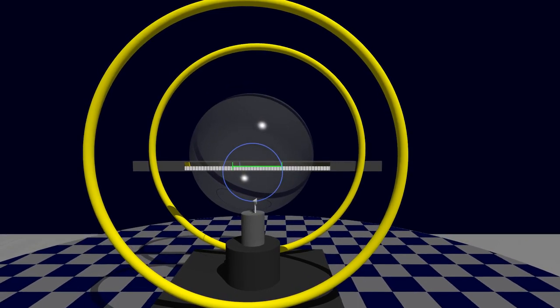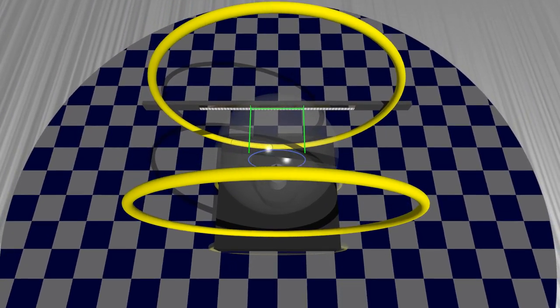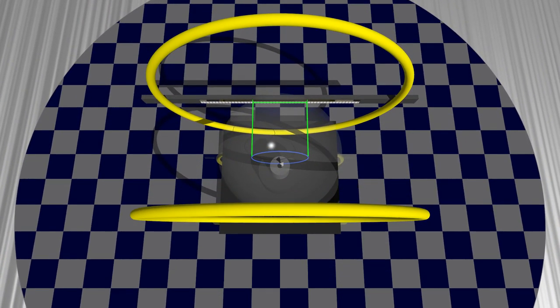When viewed from the top, we can see that this technique ensures that the distance between the two points on the scale is the same as the distance between the sides of the circular trajectory.